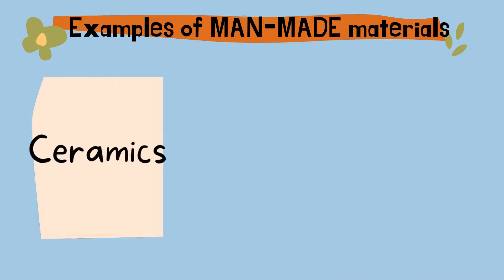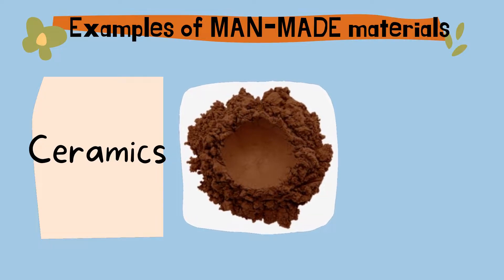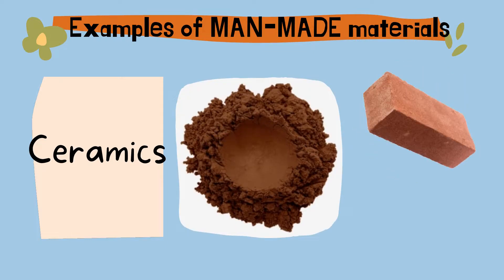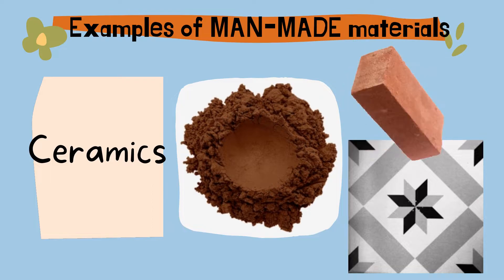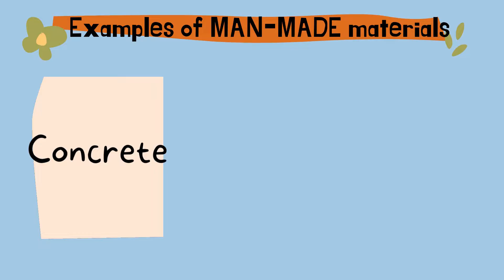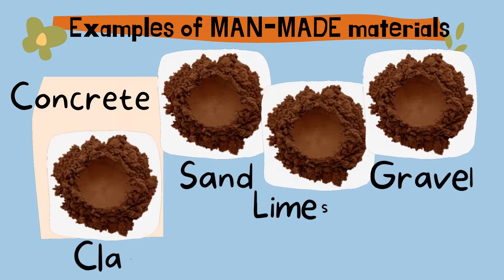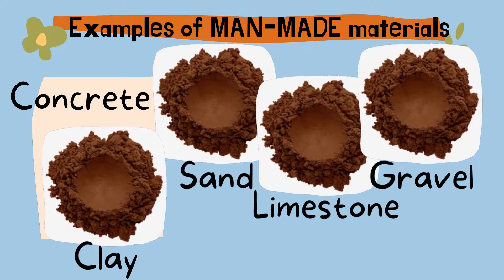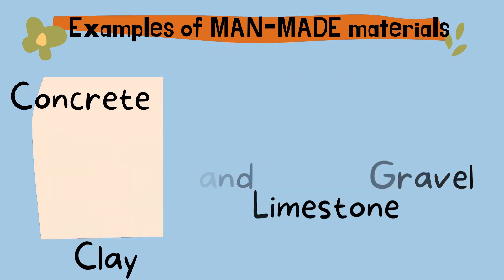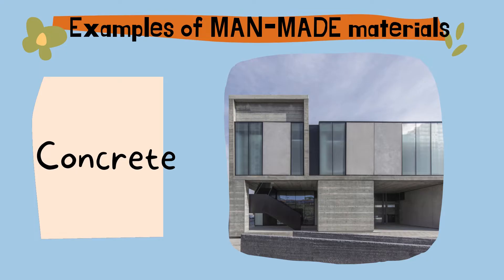Another example of a man-made material is ceramics. Ceramics are made from clay. People use clay to make ceramic bricks and ceramic floor tiles. The last man-made material is concrete. Concrete is made from clay, sand, limestone, and gravel. People use concrete to make concrete buildings.